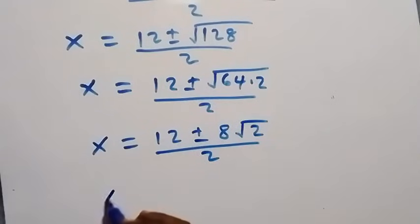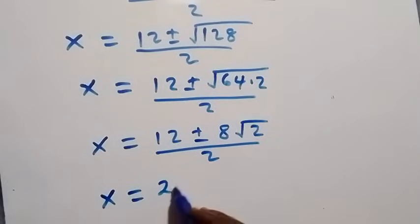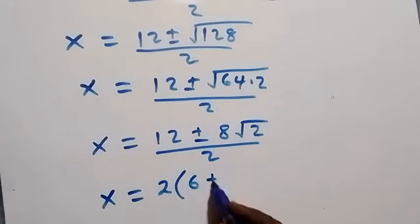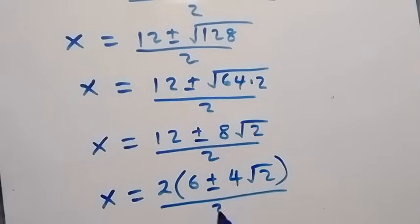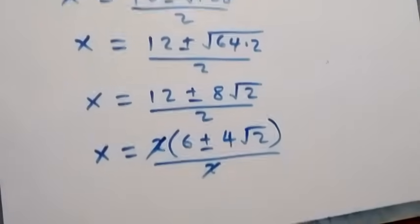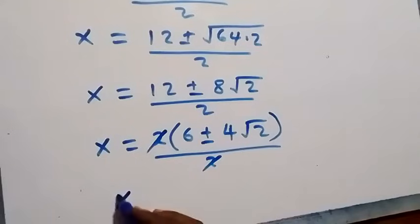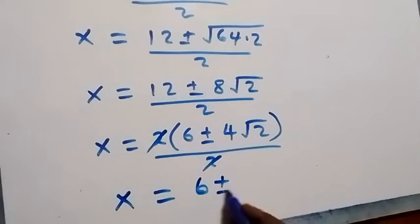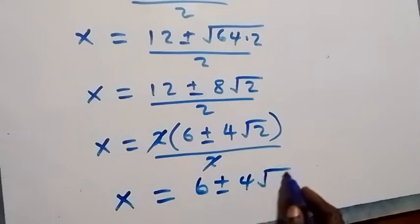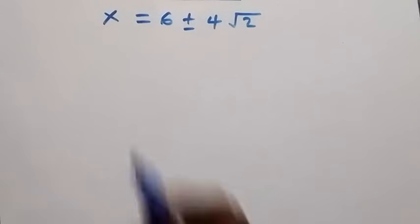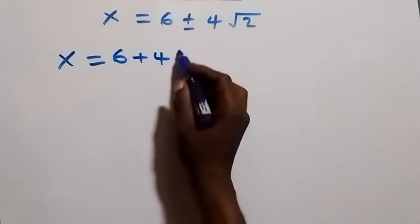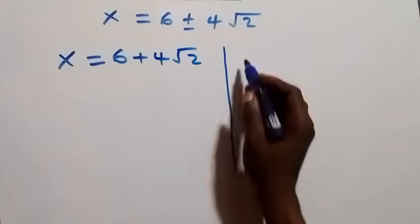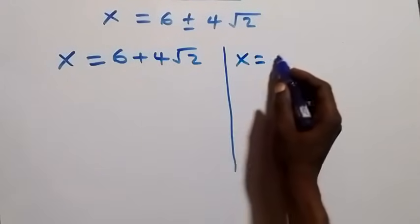We can factor 2 out from the numerator: x equals 2 times bracket 6 plus or minus 4 root 2, all over 2. The 2 cancels, so x equals 6 plus or minus 4 root 2. We now have two possible solutions.